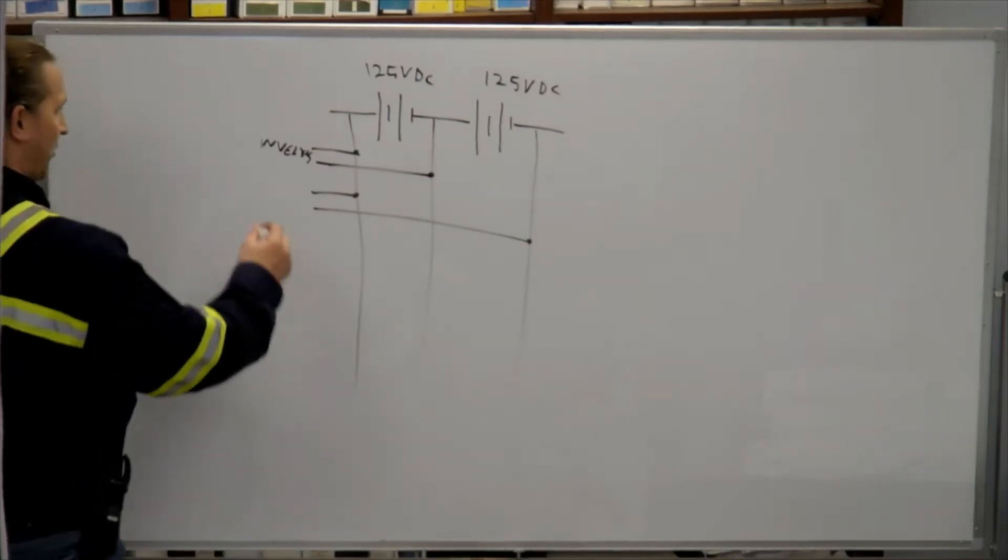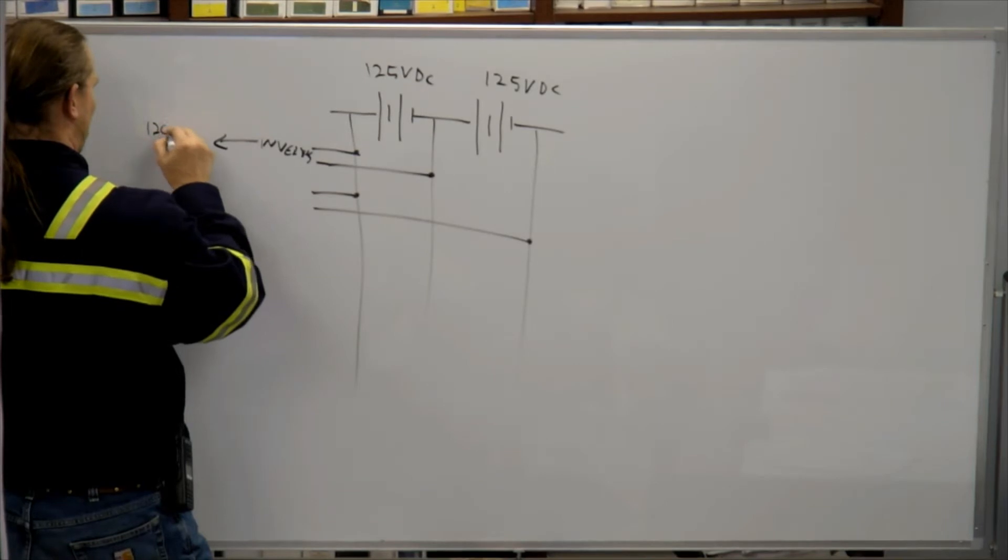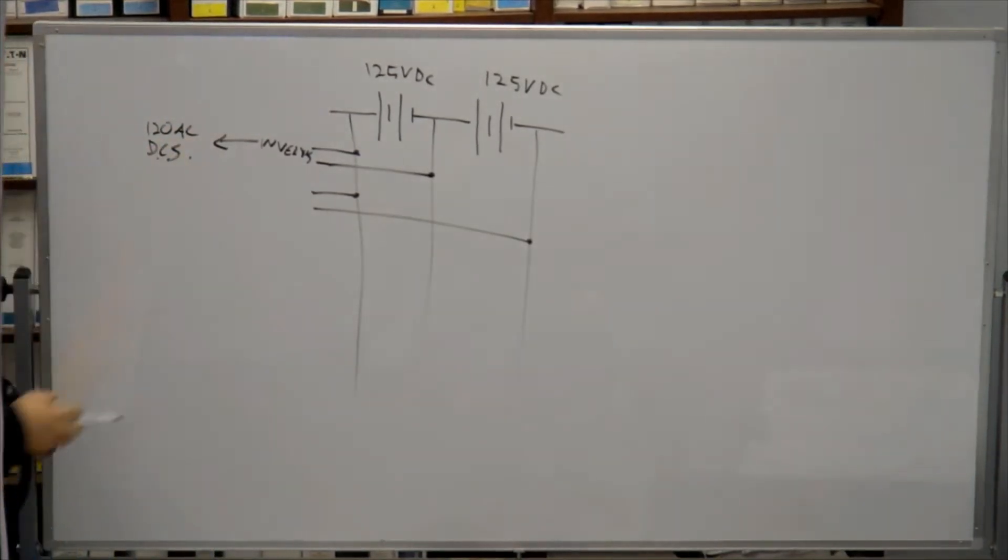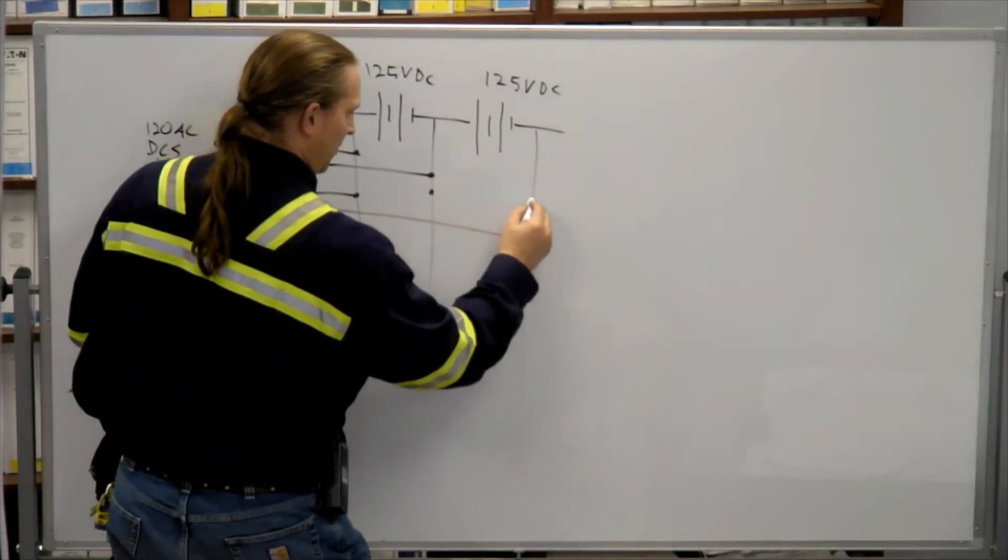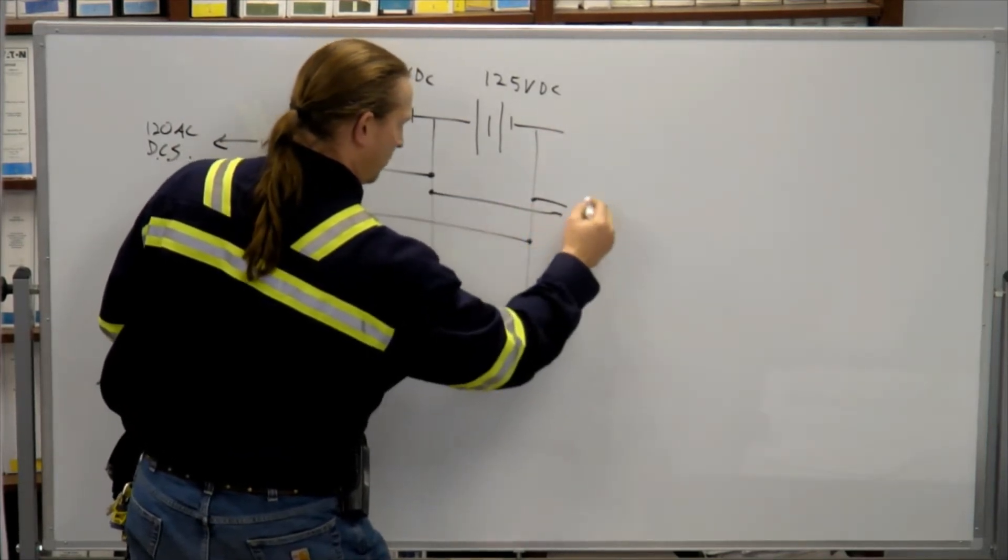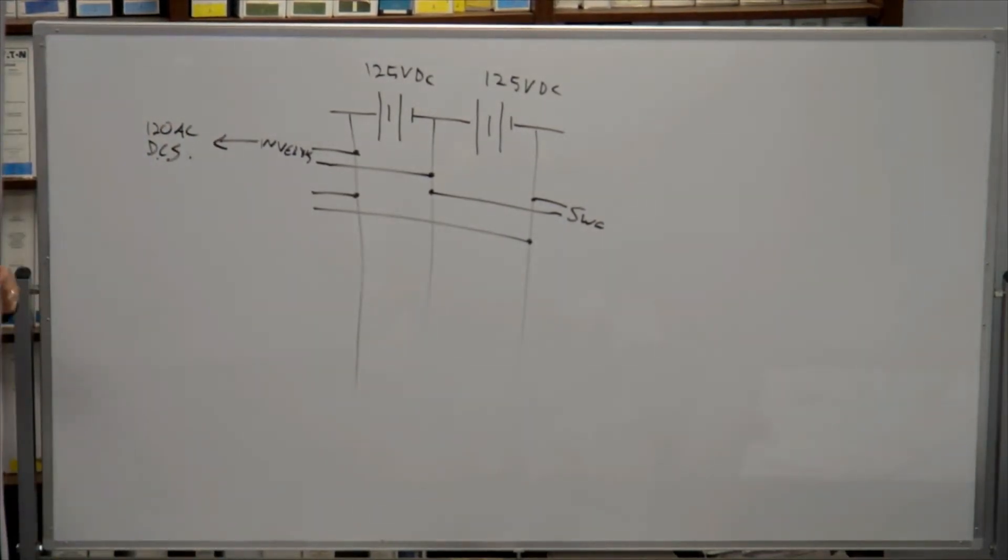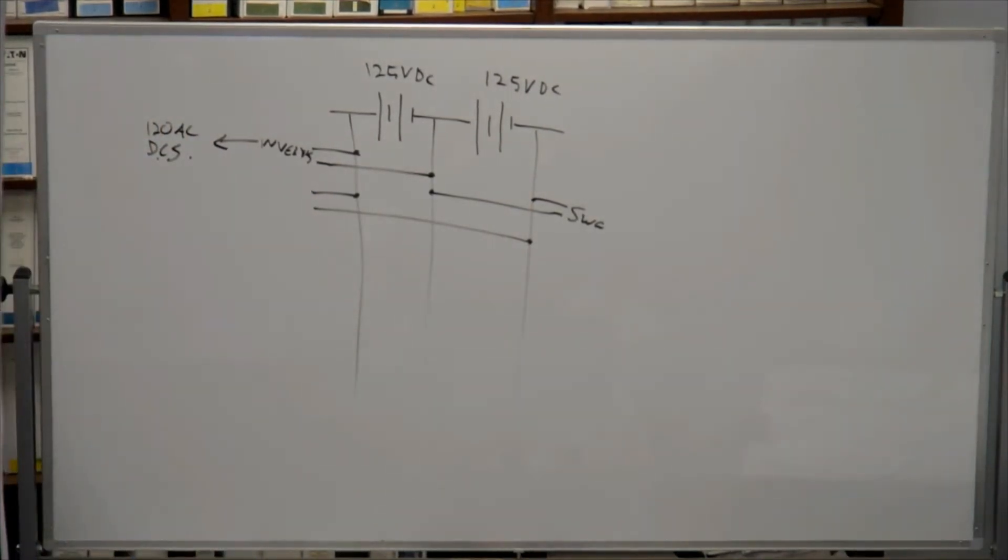So inverters which then go to 120 AC to the DCS. There's also loads that come off that go to the switchgear. So all the switchgear that is remotely operated gets signals from the DC bus. The wheels come off the DC bus with actual moving parts.